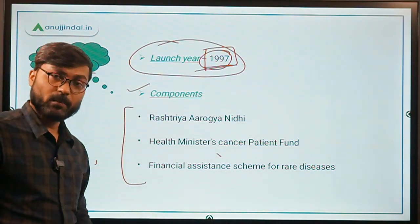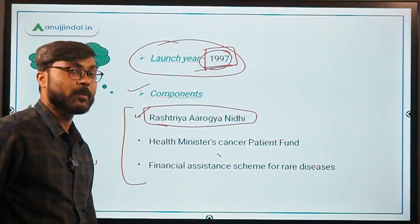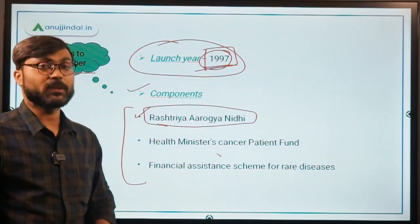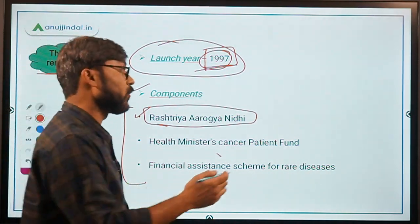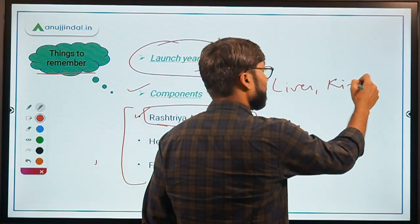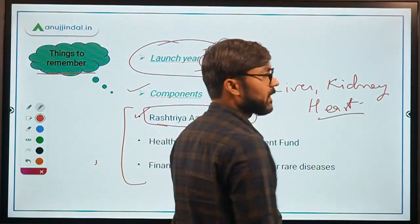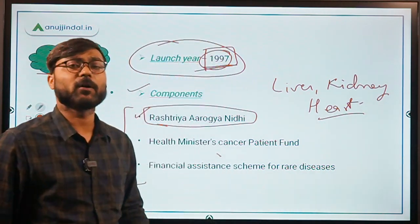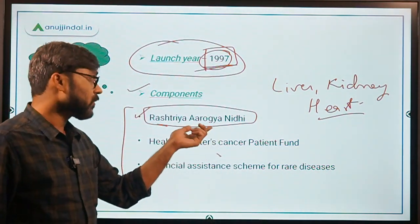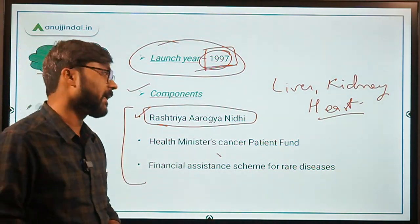There are three components under this scheme. The first component is Rashtriya Aarogya Nidhi itself, under which BPL families are provided financial support for major life-threatening diseases related to liver, kidney, heart, or any other organ.